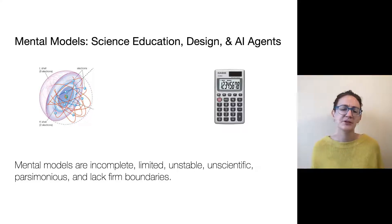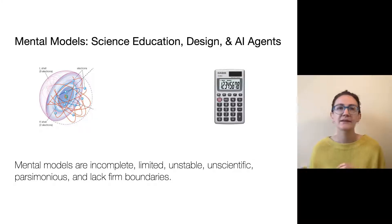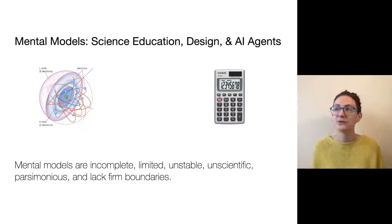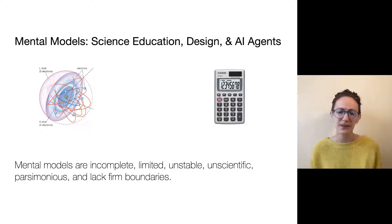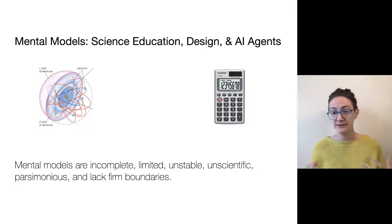Don Norman found that mental models are incomplete, limited, unstable, and often unscientific or superstitious about things. But they're also parsimonious and lack firm boundaries — we're always drawing on our experiences of similar devices. This paints a bad picture of mental models, but actually they're incredibly useful. They're the way that we interact with an incredibly complex environment, and they value utility over accuracy. As a calculator user, I don't have to perfectly understand how it works in order to use it in an extremely functional way.